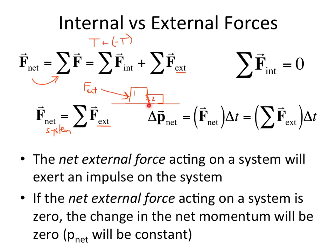For a system, the change in momentum equals the net external force on the system times the change in time. If forces act between two objects in the system, those forces can apply to each object, but for the whole system, neither force is going to cause a momentum change. Only a net external force is going to cause a momentum change — it's going to cause an impulse.